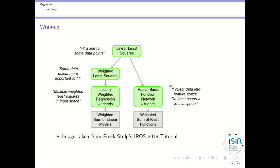To summarize all regression methods: first, linear least squares fits a line to data points. Weighted least squares gives more importance to central data points. Locally weighted regression performs multiple weighted least squares across the input space. Radial basis function networks project data into a feature space and perform just one least-squares regression in that projected space.